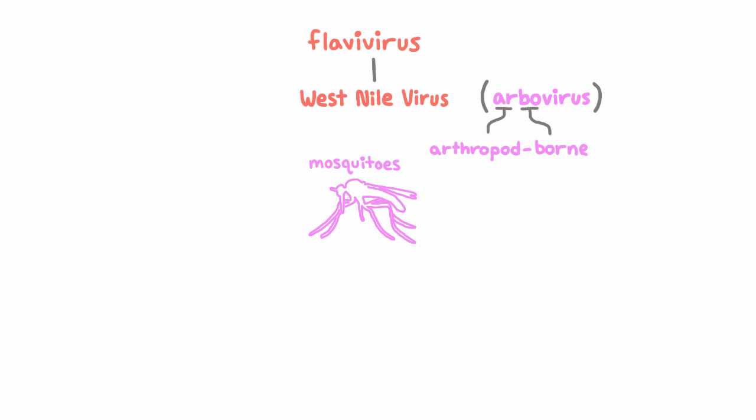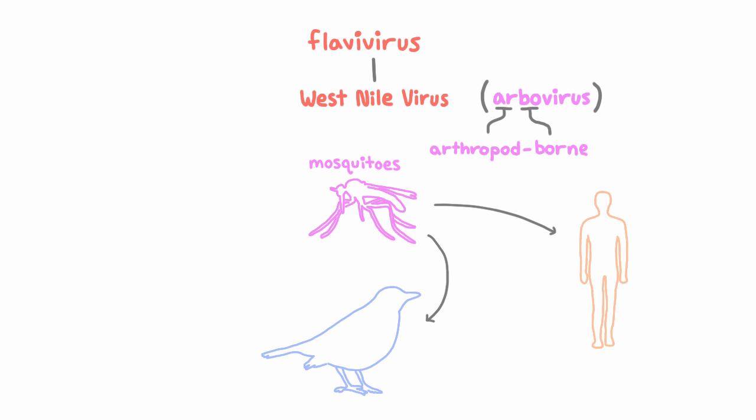Mosquitoes carry it, and humans get it from mosquito bites. In fact, the usual life cycle of West Nile virus does not involve humans. Normally, it spreads between mosquitoes and the birds that they bite.